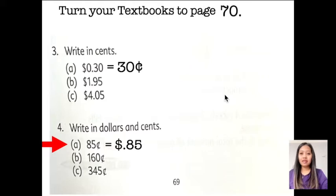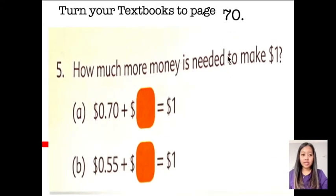Okay. Now, let's turn our books to page 70. How much money is needed to make one dollar? 70 cents plus is equal to one dollar. The answer is... Yes, 30 cents. 55 cents plus dollar is one dollar. Your answer should be... 45 cents. So, don't forget to put the decimal point if you're using the dollar sign.